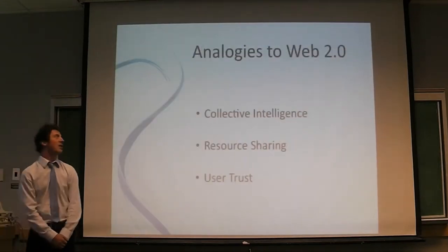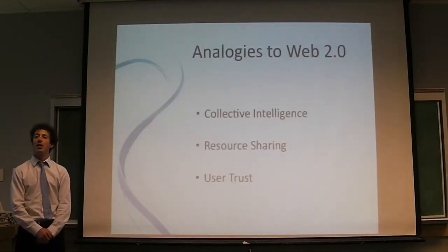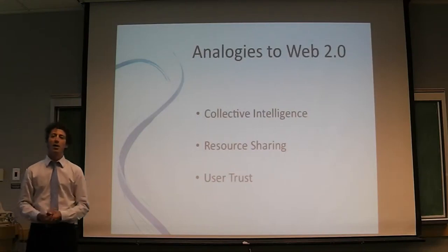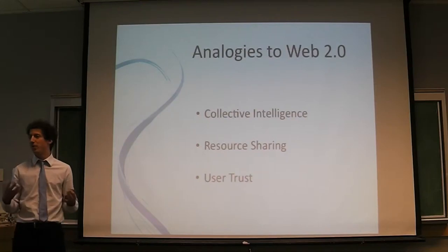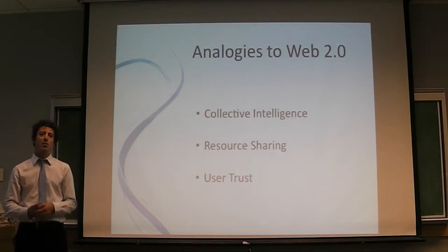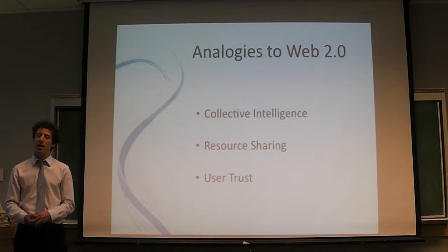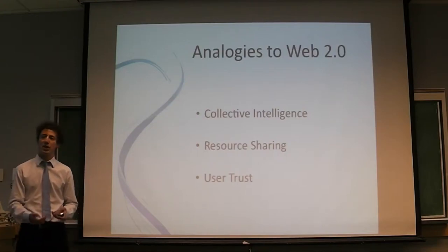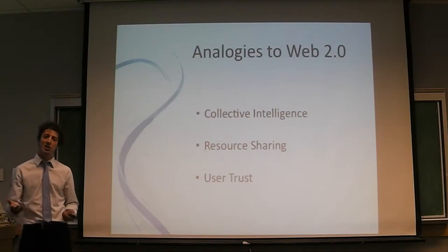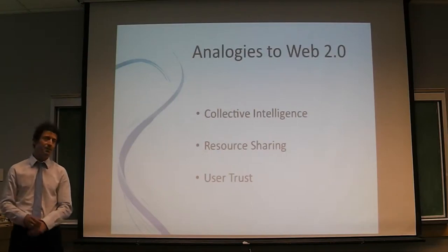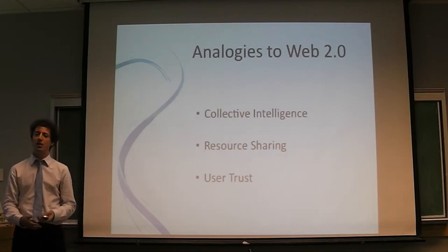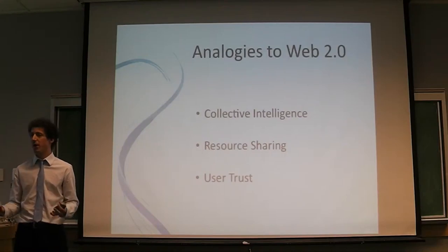Some of the analogies between Web 2.0 and commercial albacore tuna fishing are collective intelligence. In Web 2.0, we have a general sharing of information such as in Wikipedia and open source programming like Firefox. This is also present in commercial albacore tuna fishing, as I mentioned earlier, with sharing of catch locations and catch rates. We also see resource sharing in Web 2.0 where there is a sharing of excess processing power.